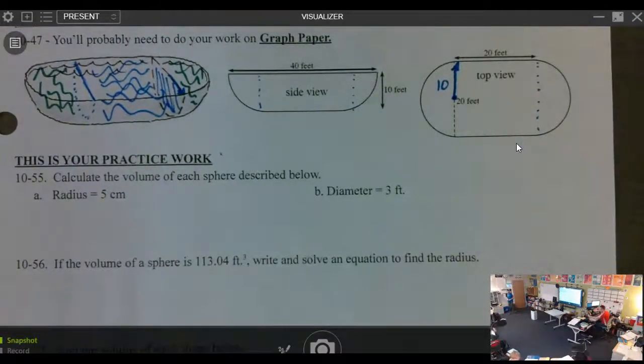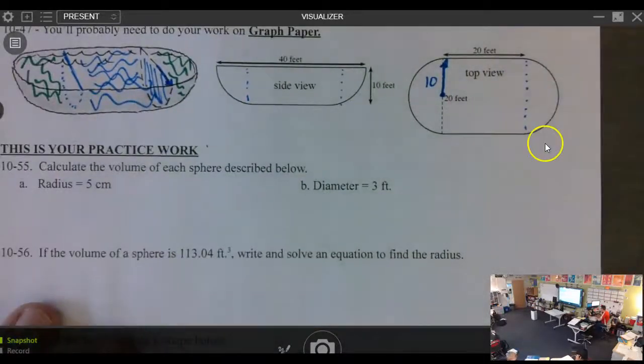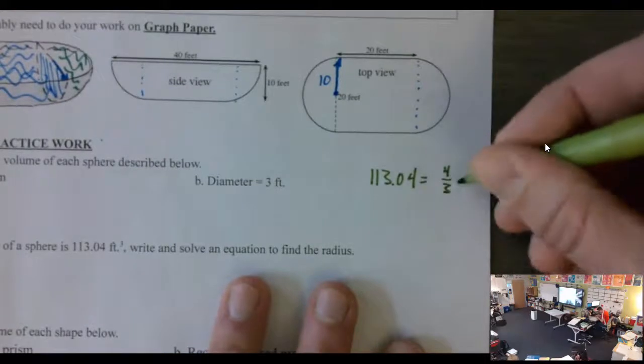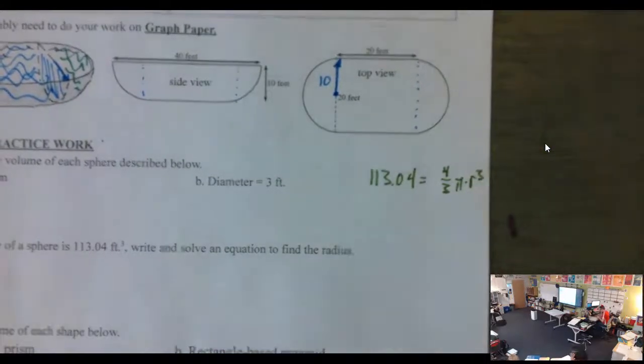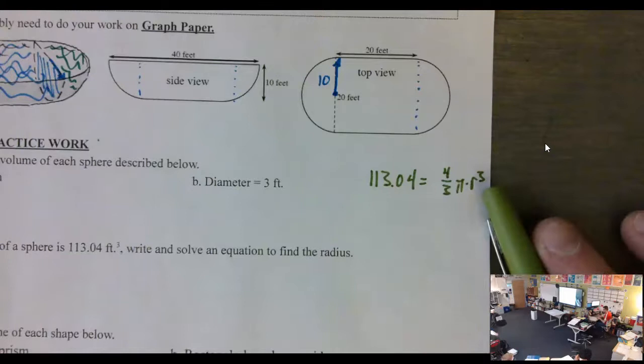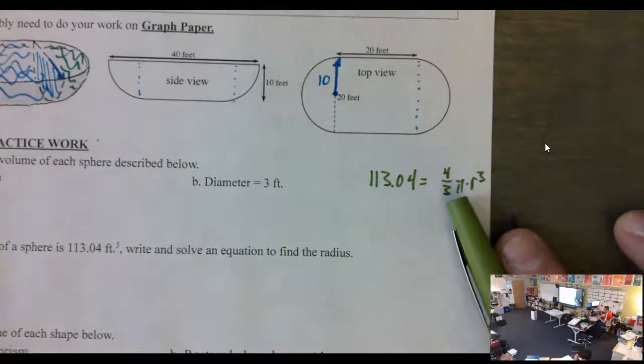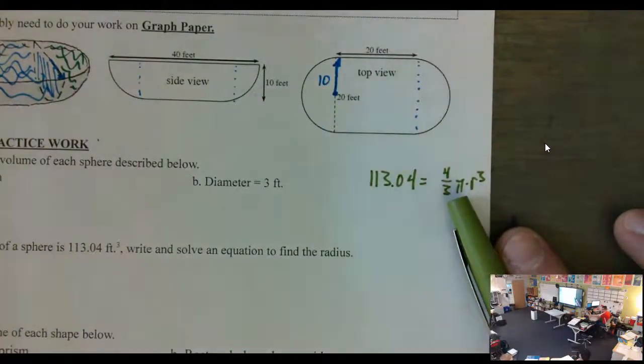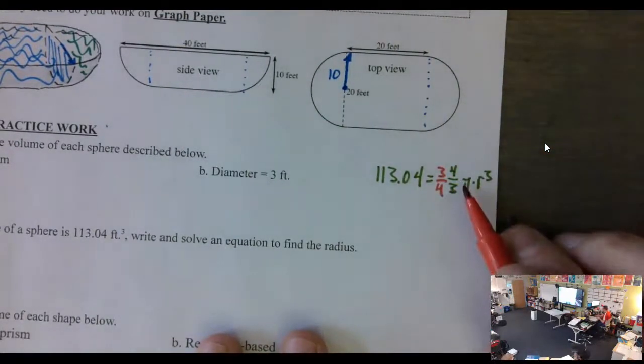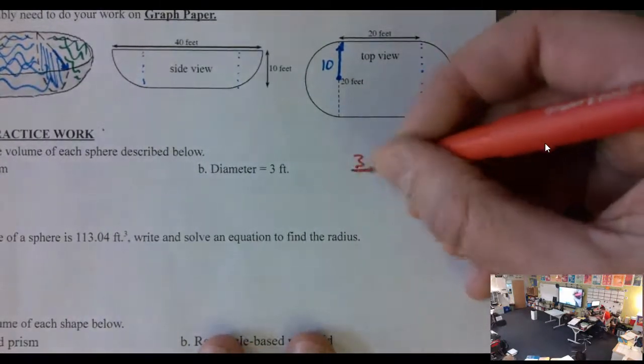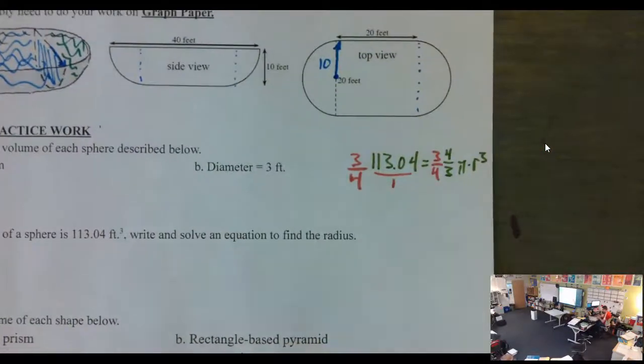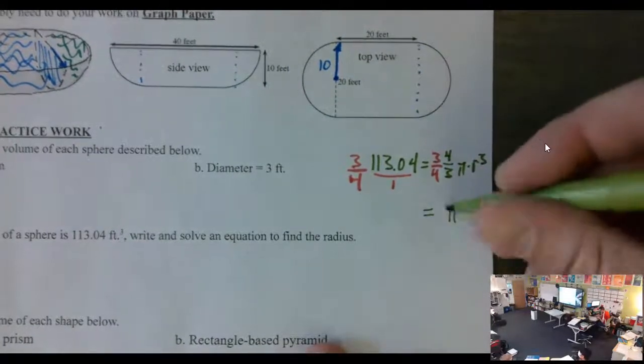So if 113.04 equals four thirds pi r cubed, I'm going to do this work out here where I have some space. What would I take care of first, the cube or the four thirds? The four thirds, because if I try to take care of the cube first I'm going to cube root four thirds and that's going to get messy as all get out. I could do it first, it's just a bad idea. So how do I get rid of four thirds? It's multiplying so we multiply by its reciprocal, so we multiply by three fourths and this we can put over a one.